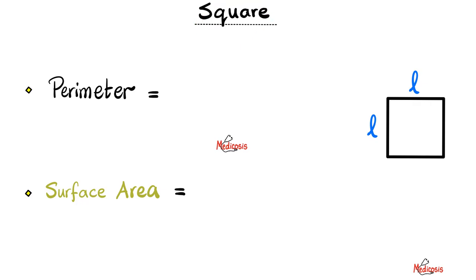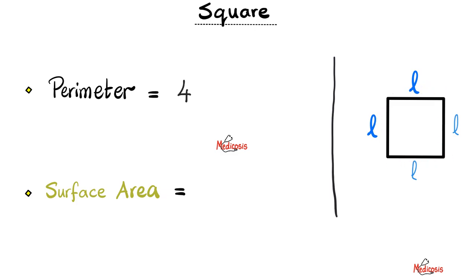Let's start with the first figure, the square. If the side length of the square is L — the square by definition means that all sides are equal, so all of them are L. What is the perimeter? Imagine that you started with a thin long thread and made a shape of a square using that thread. The perimeter is the total length of that thread, so it is L plus L plus L plus L, or simply 4L.